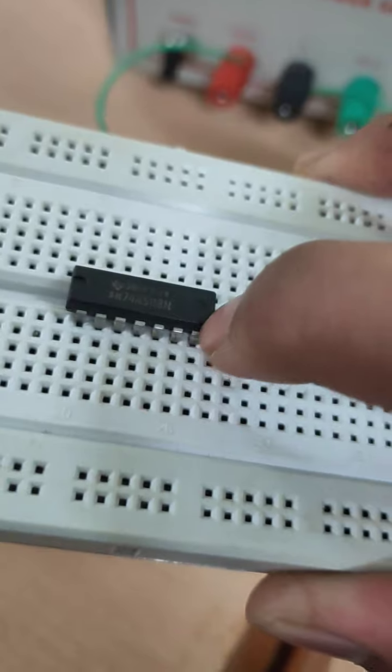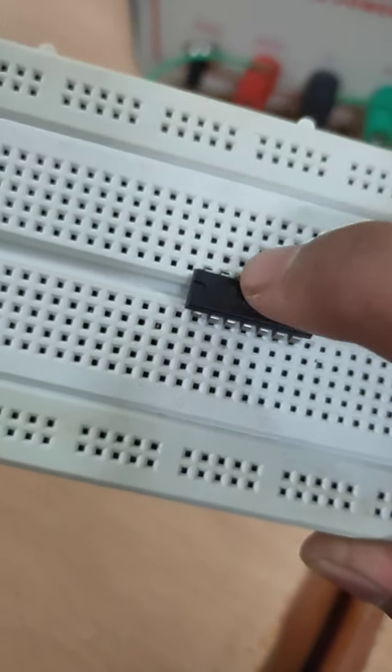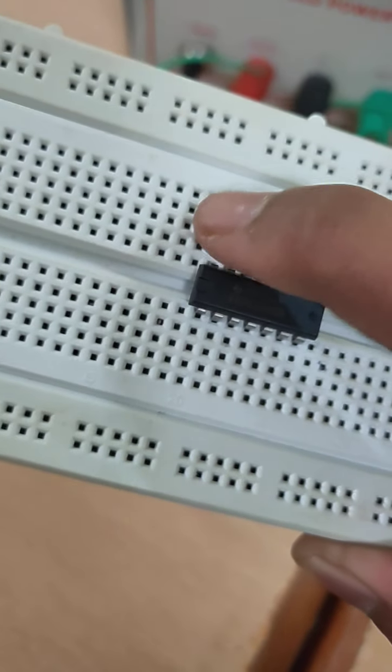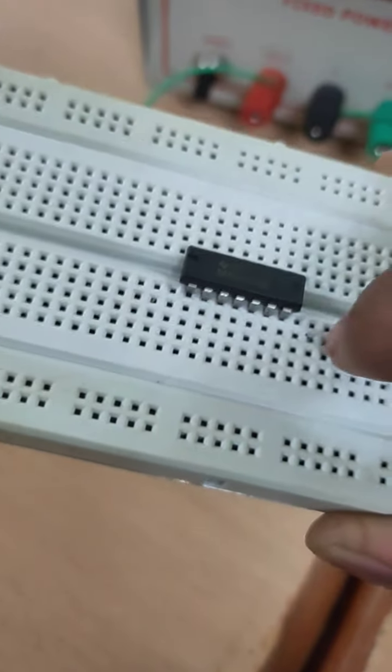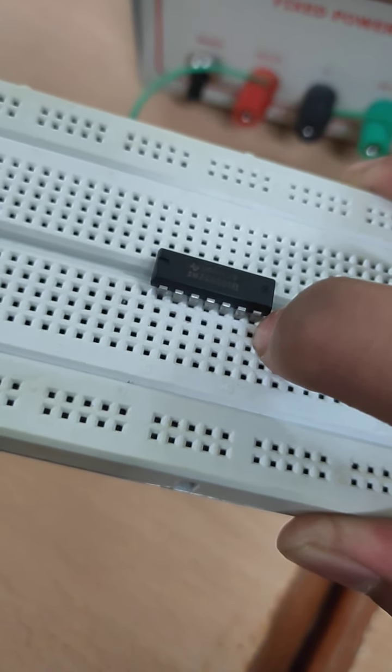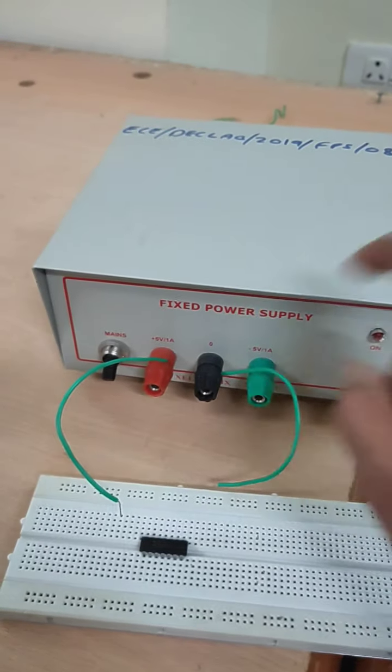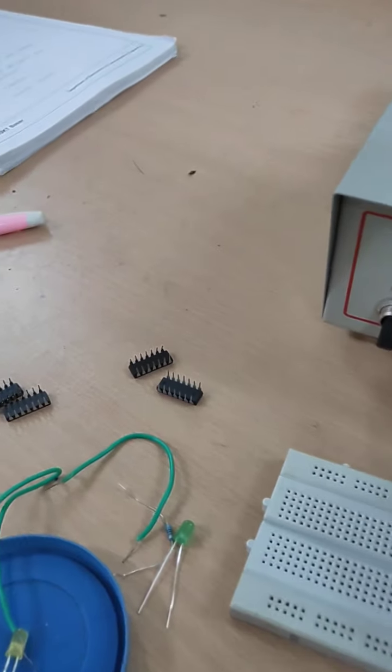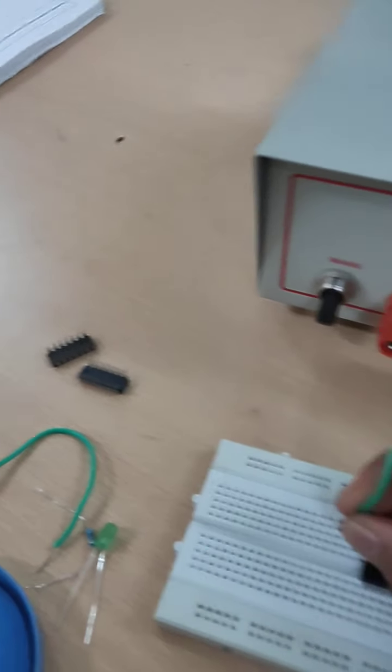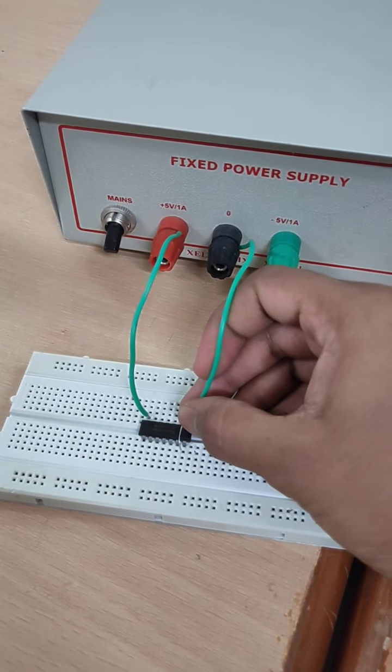7th is ground, 8, 9, 10, 11, 12, 13, 14th. We need to activate this IC by applying VCC at the pin number 14 and ground to the pin number 7. And this is the power supply.